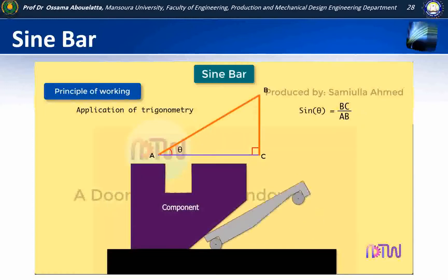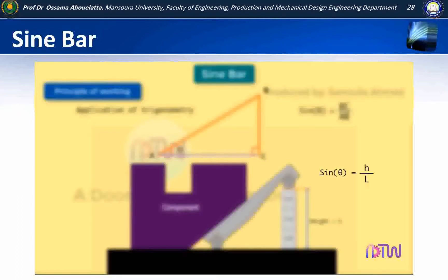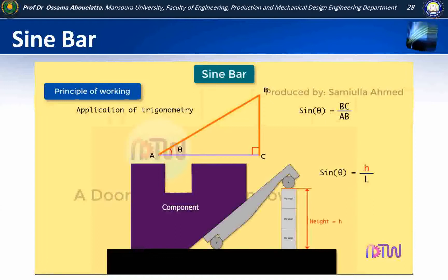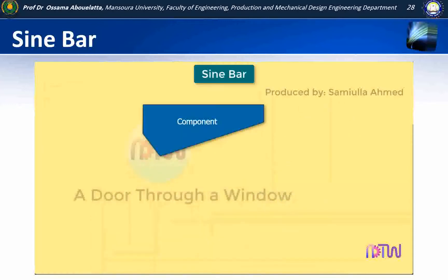By placing the slip gauges under one roller, the bar surface can be made parallel to any angular surface of work. Then by measuring the total height made by slip gauges, the angle can be found by using this relationship, where H equals height made by slip gauges and L equals distance between the centers of rollers. Let us see how the angle of a small component is measured using the sine bar.